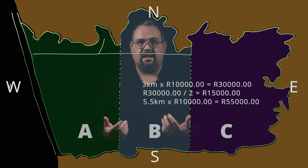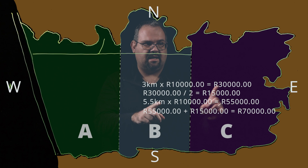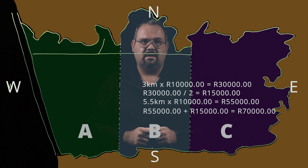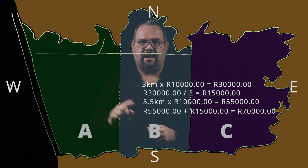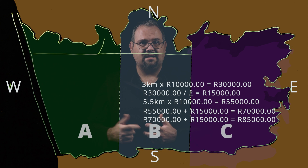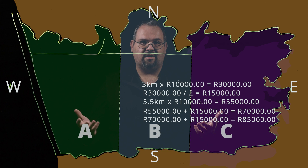Let's verify the total. Owner C pays 55,000 rand to owner B for that piece, plus 15,000 rand to owner A for the shared piece, totaling 70,000 rand. Owner B pays owner A 15,000 rand for the shared piece. 70,000 plus 15,000 brings us to 85,000 rand, and thereby our mathematics tally out.